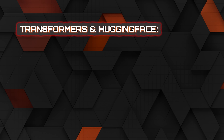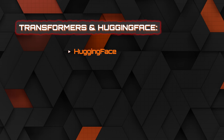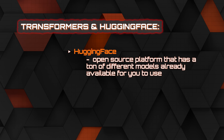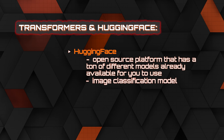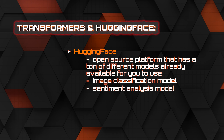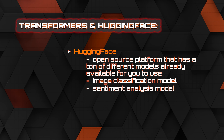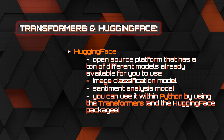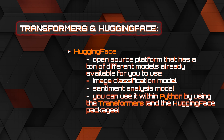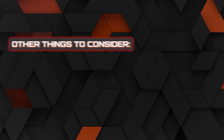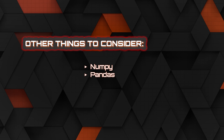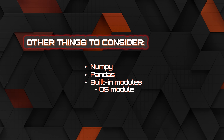At the same time, or depending on what you're building, I recommend looking at Transformers and Hugging Face. Hugging Face is an open-source platform with a ton of different models already available — image classification, sentiment analysis, whatever you want is probably already on there, and you can use it within Python using the Transformers and Hugging Face packages. You can download the model, fine-tune it, or run it exactly as it is. There are also packages like NumPy and Pandas, which are always good to know.